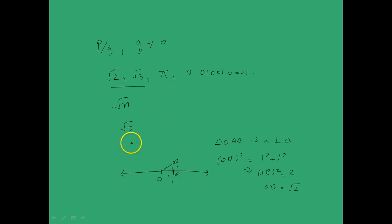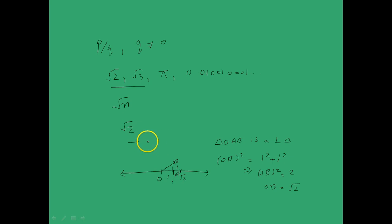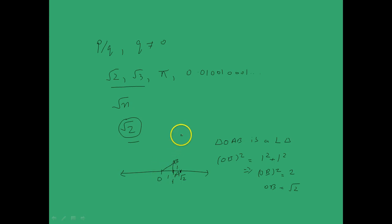So the length of OB is root 2. If you wish to find the representation of root 2 on the number line, all you need to do is take a compass, measure out the distance from O to B, and bring point B down to the number line. The point where it intersects will precisely be root 2 on the number line. Keep in mind that you can find the representation of any number of the form root over n if you know the representation of root over n minus 1.